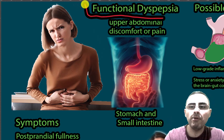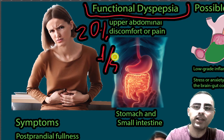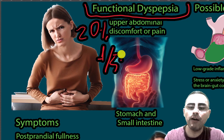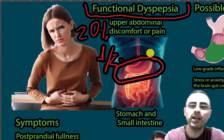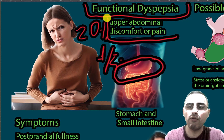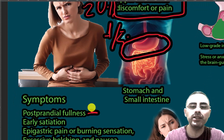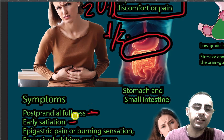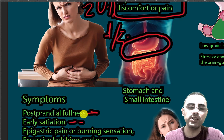Functional dyspepsia is a very common condition. It affects around 20 percent of the world population — that means one in five. It usually affects the stomach or small intestine. The most common symptom is upper abdominal discomfort or pain, which is usually post-prandial, meaning pain after eating, and early satiation — the feeling of fullness even before you finish your meal.